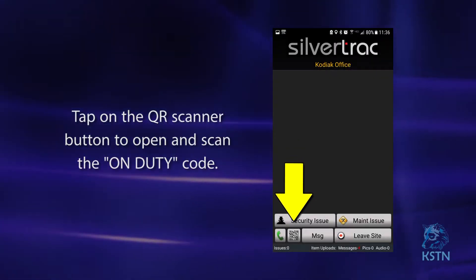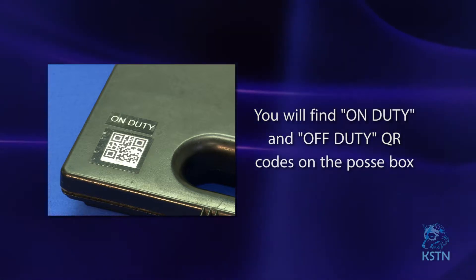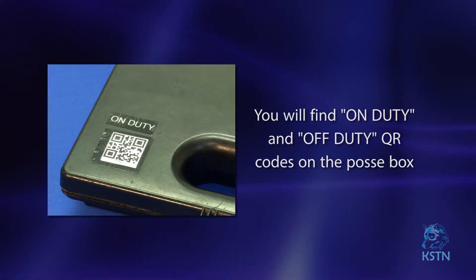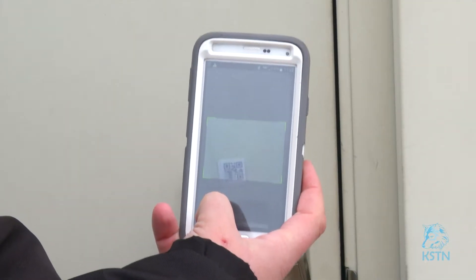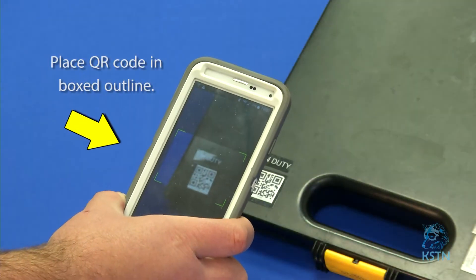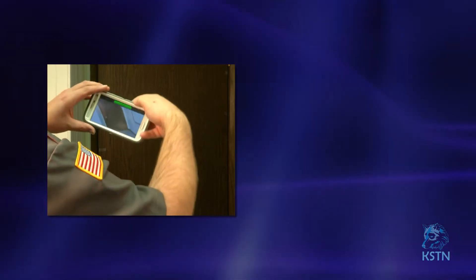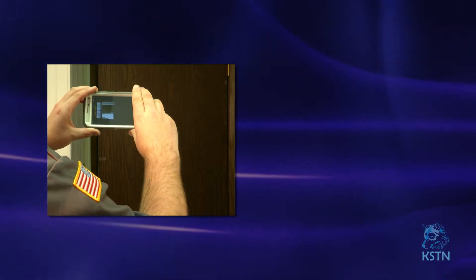Tap on the QR scanner button to open. You'll be looking for the on-duty QR code to start the shift. The QR codes for on-duty and off-duty will be found on the front of the site posse box. You'll also repeat this step for every QR code that you need to scan for the shift. With the scanner open, place the QR code in the boxed outline. For some sites, when the scan is complete, a text box will open, then the camera, so you can take a photo of the area that you are in. In some cases, only the camera will open.